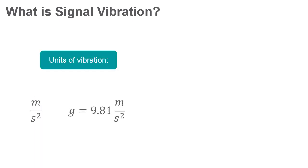Vibration can be expressed in metric units, meters per second squared, or units of gravitational constant g, where 1g is equal to 9.81 meters per second squared.